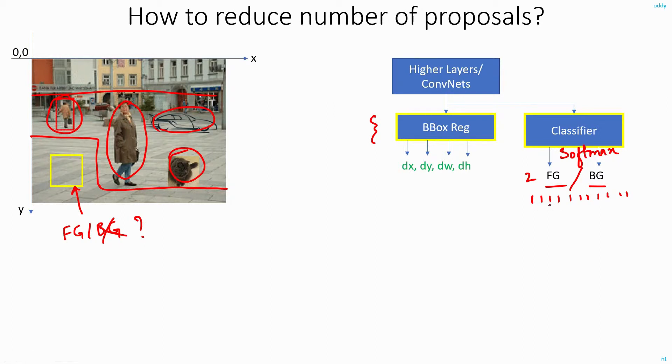Moreover, this has another advantage. Let's say after doing the classification I am able to eliminate all the background regions. Even after eliminating, let's say I'm left with still 5,000 regions that are labeled as foreground. The advantage of using softmax or any other classifier that can give me a score is that I'll not only get to know whether it's a foreground or background, I will also be getting a score.